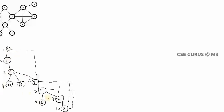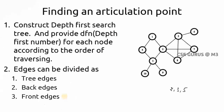Back edges and front edges come only from the dotted lines, not from the tree edges. For example, 1 is a back edge for 2, and 2 is a front edge for 1. Similarly, 2 is a back edge for 7, and 7 is a front edge for 2. Also, 2 is a back edge for 8, and 8 is a front edge for 2. And 5 is a back edge for 8, and 8 is a front edge for 5. Remember what are tree edges, back edges, and front edges.